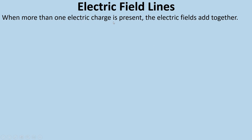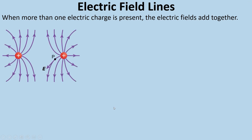When more than one electric charge is present, the electric fields add together. For two positive charges, each alone would produce a field that diverges away from it. Because like charges repel, the electric field lines bend away from each other. At any point, the direction of the electric field is tangent to the field line at that point. If a test particle is placed on a field line, it experiences a force in the direction of the arrow along that line.